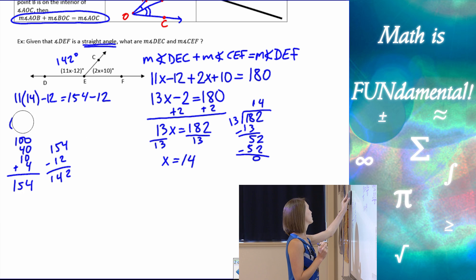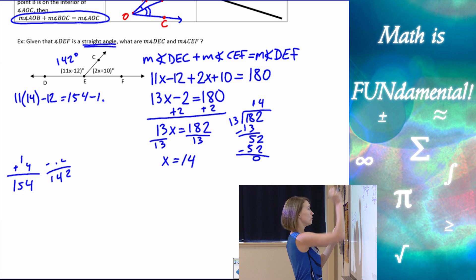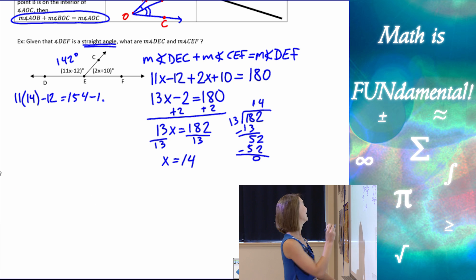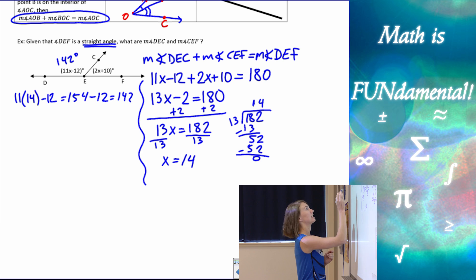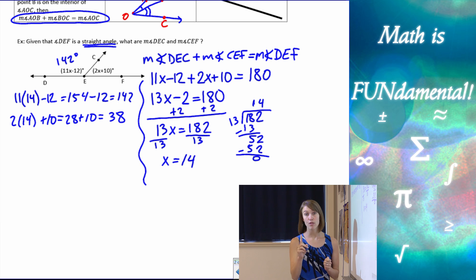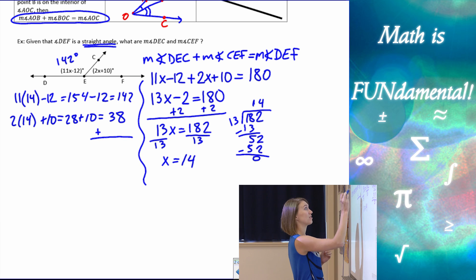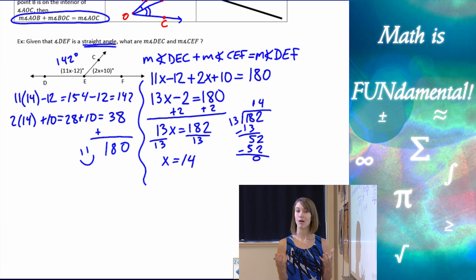And then let's do the next one. 2 times 14 plus 10 is going to be 28 plus 10, which is 38. And remember those two angles together need to add to 180. So let's just check our work really quick. Let's add those together. Make sure that it gives us 180 degrees. 10 carry the 1 and we get 180 degrees, which means our problem is correct.